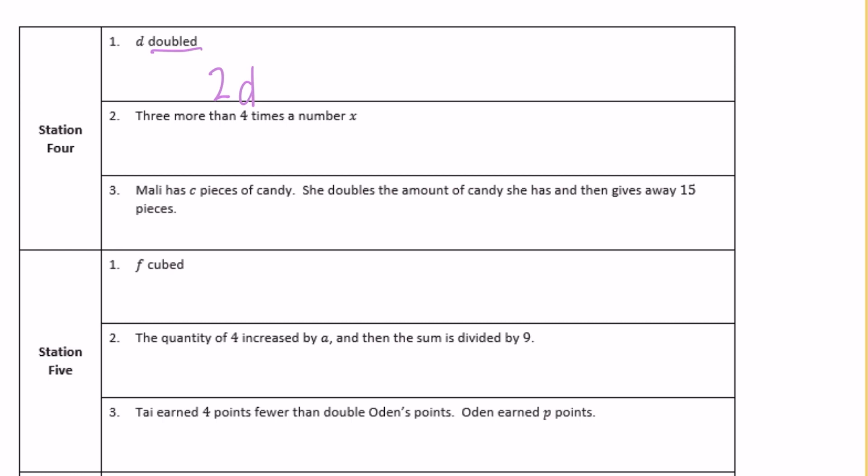Number two, three more than four times a number x. Three more would be plus 3, then four times a number x. So four times x and then three more: 4x plus 3. Or you could switch the order, doesn't matter.